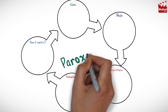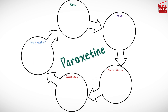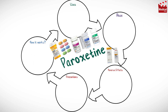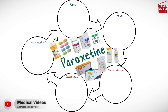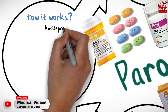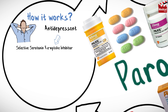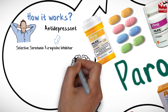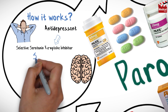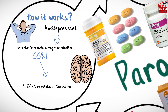In this video we'll briefly discuss what paroxetine is, how it works, what it's used for, the dose, side effects, contraindications, and precautions. Paroxetine is an antidepressant belonging to a category of drugs called selective serotonin reuptake inhibitors.